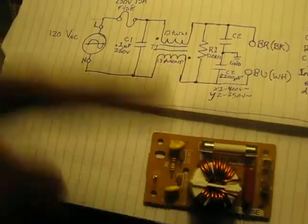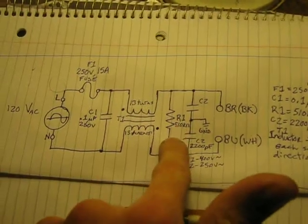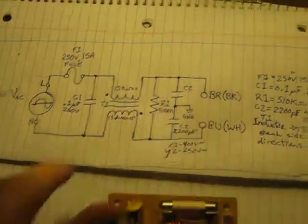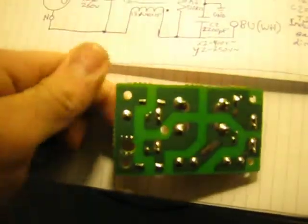So one's wound clockwise, one's wound counterclockwise. We've got a resistor, two capacitors with a pin connecting to ground in between it. That's that pin right there. You can see on the other side there.